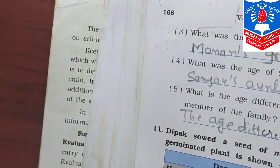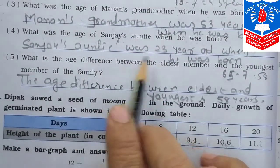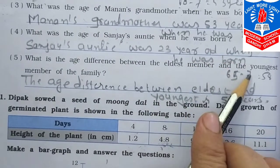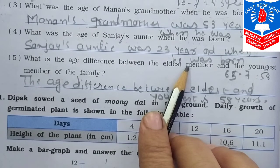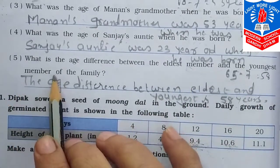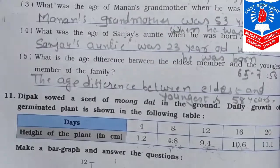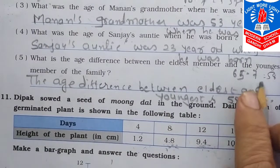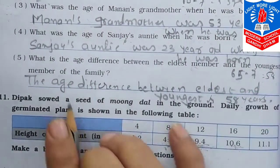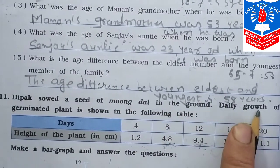See the questions and answers here. Sanjay's auntie was 23 years old when he was born. What is the age difference between the eldest and the youngest member of the family? The eldest is grandfather — 65 years. The youngest is Manan — 7 years. So 65 minus 7 equals 58. The age difference between the eldest and youngest is 58 years.